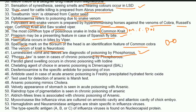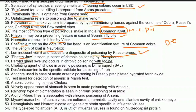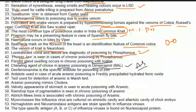Parotid gland swelling occurs in chronic poisoning with iodine. The chelating agent of choice in arsenic poisoning is dimercaprol or BAL — this is a very important point.